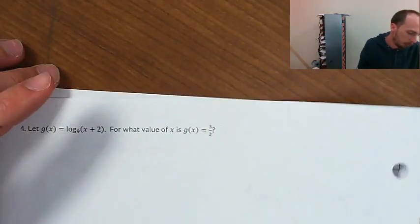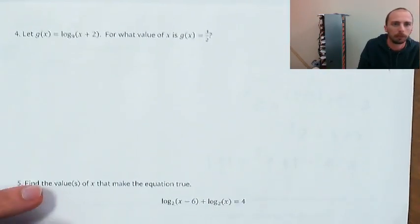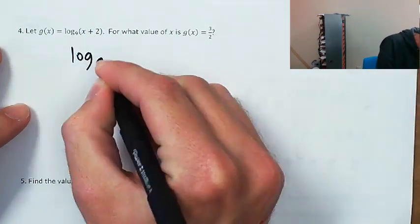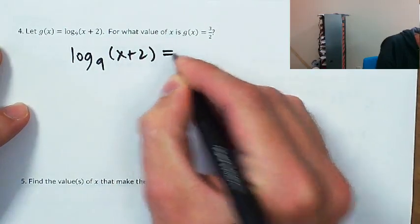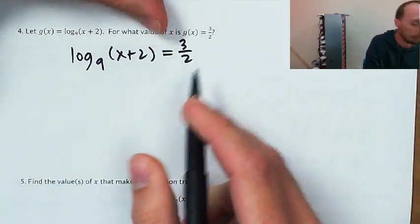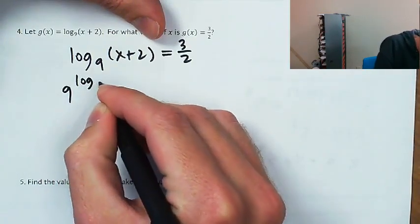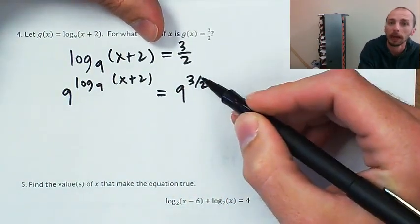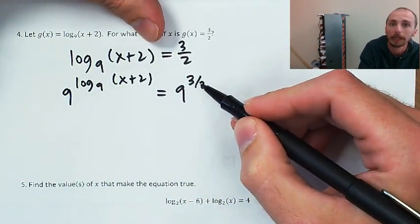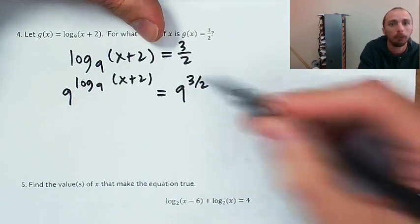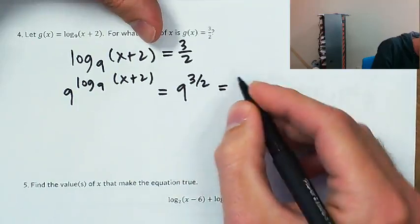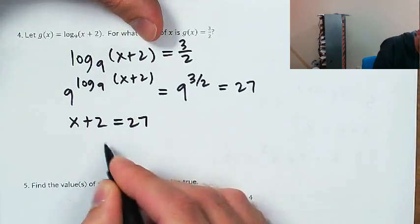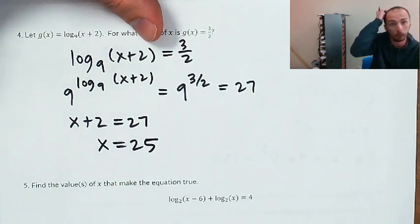On the back we've got number 4. g of x is log base 9 of x plus 2, where g of x equals 3 halves. We're just going to set those two things equal: log base 9 of x plus 2 equals 3 halves. I'm going to take 9 to both sides as a power. When I take 9 to the 3 halves, I take the square root of 9 and cube that — square root because of the 1/2 power, cubed because of the 3 in the numerator. That's 3 to the 3rd, which is 27. So x plus 2 equals 27, subtract 2 from both sides, and you get x equals 25.